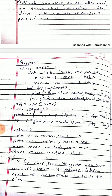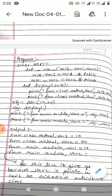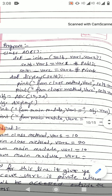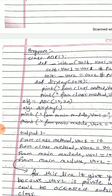Now we are creating an object for that class: obj = ABC(10, 20). Here obj is the object, 10 is the value of var1, and 20 is the value of var2. We then access the display method using obj.display().